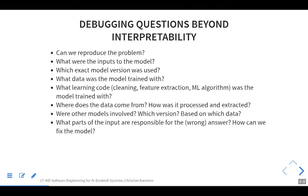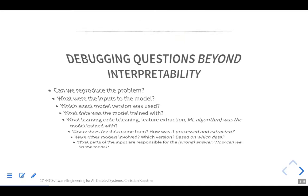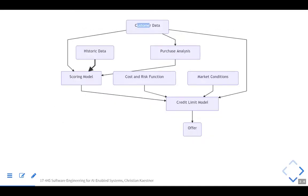What inputs were used for the model? Which exact model version was used? If we do A/B testing, we need to know that too. What data was the model trained with — can we figure out why the model is biased? What code was used to train the model — what feature extraction code, what algorithm, what library, where does the data come from, how was it processed? Which version produced which input? And if we get a wrong answer, what part of training data, user data, or intermediate results is causing the problem?